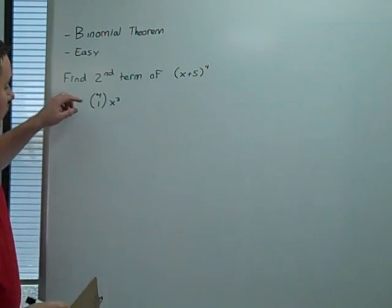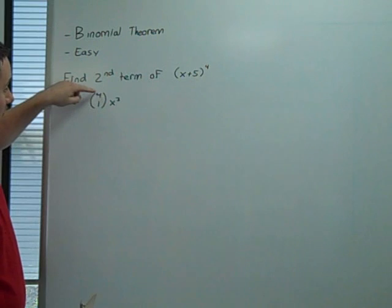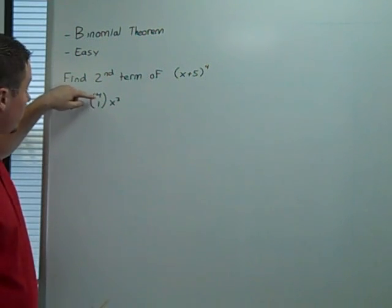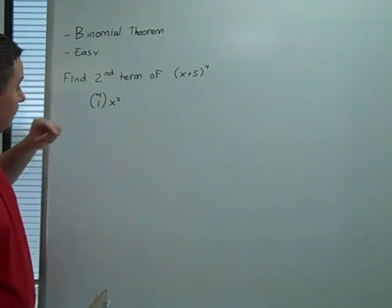One pattern is that the exponent of this term is always going to be the bottom term in the choose minus the top term.